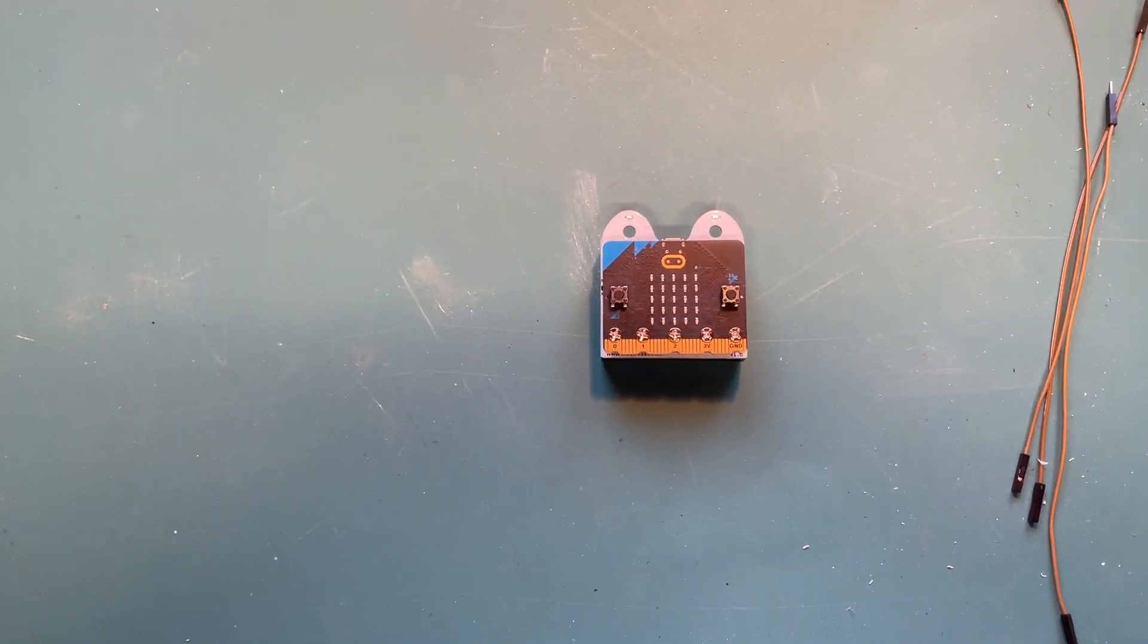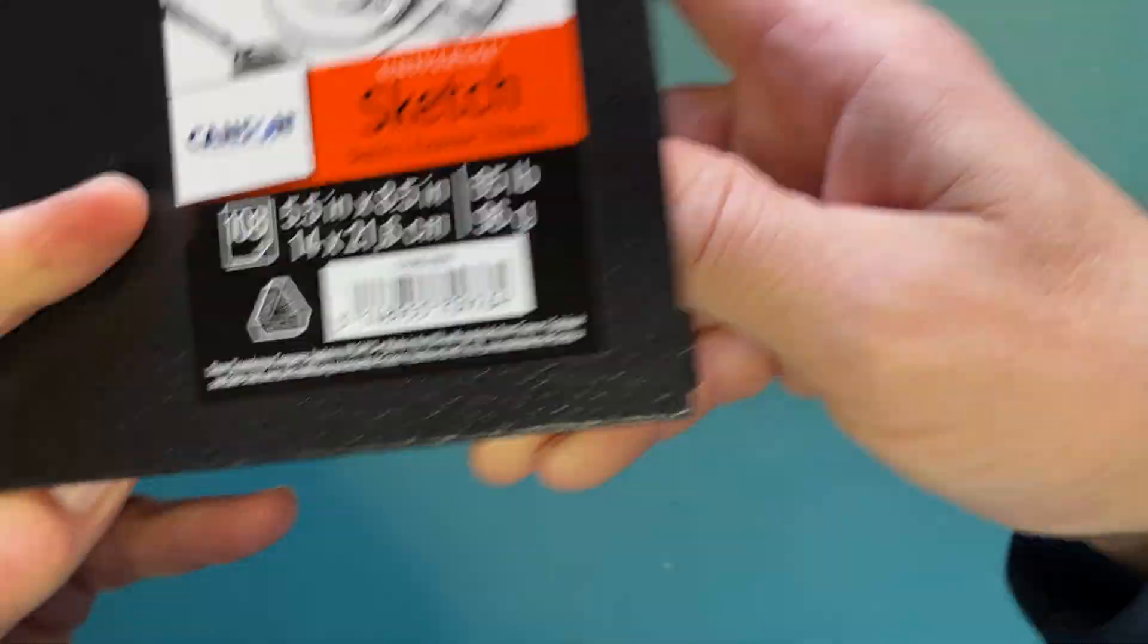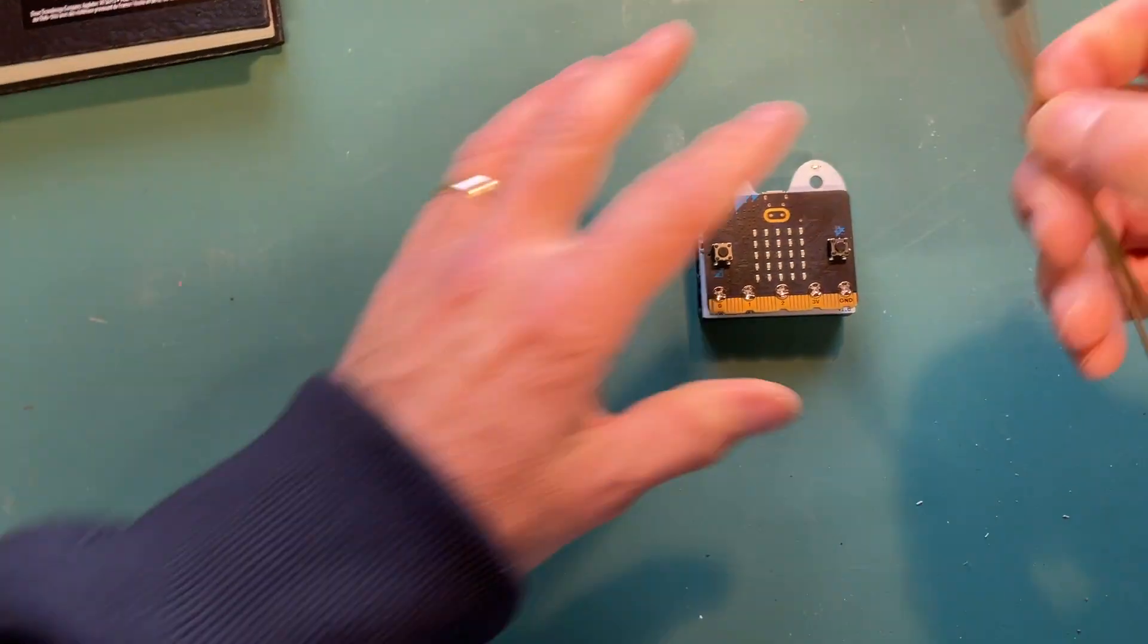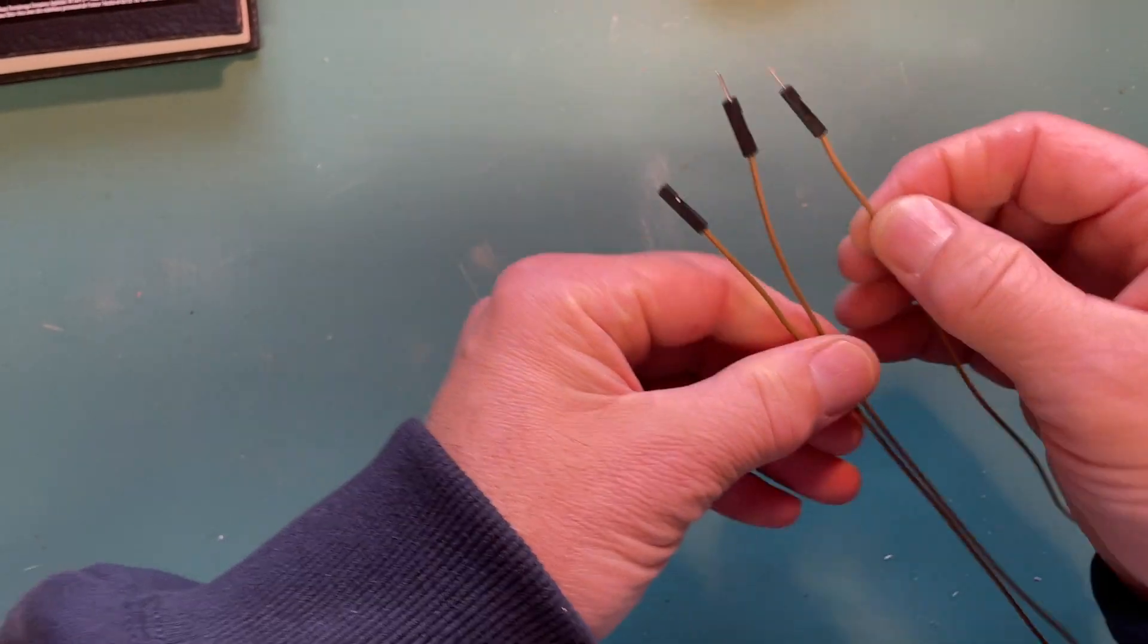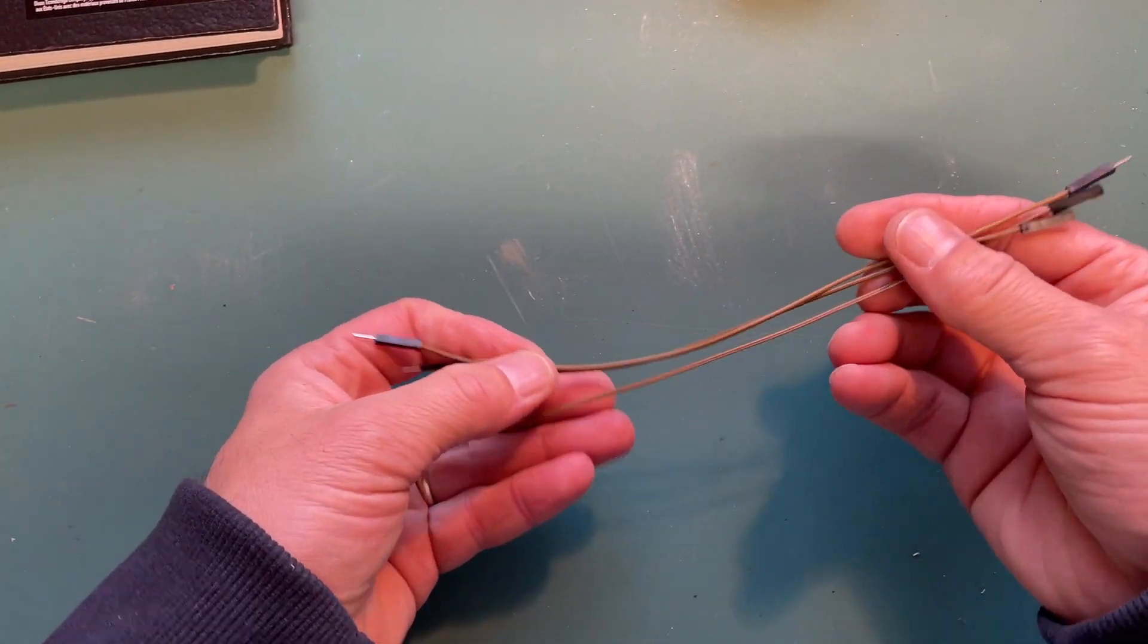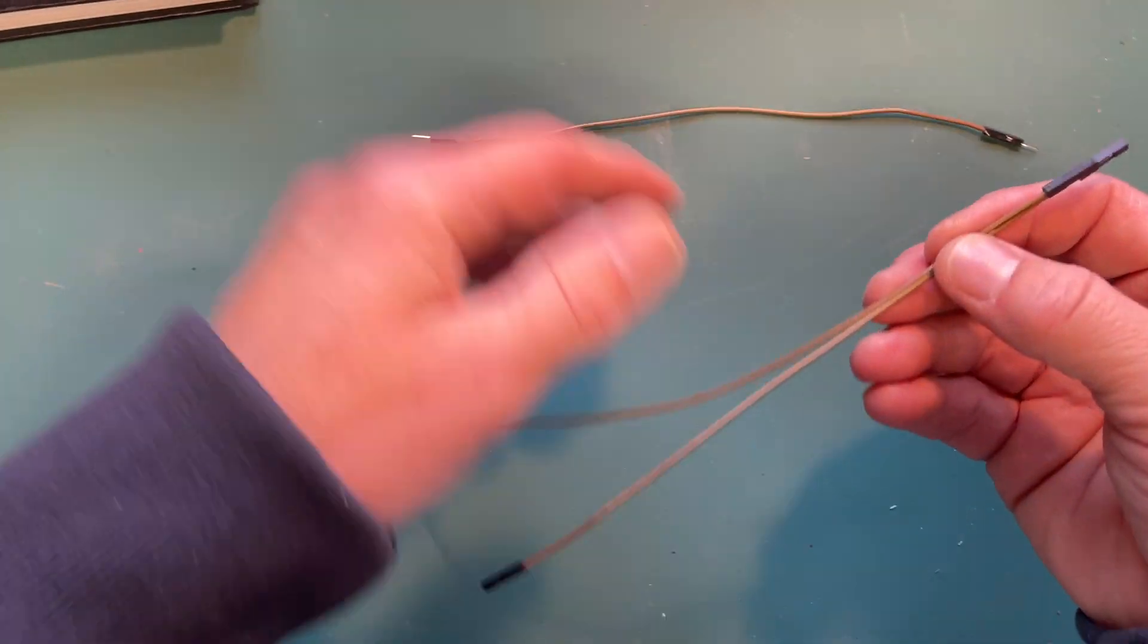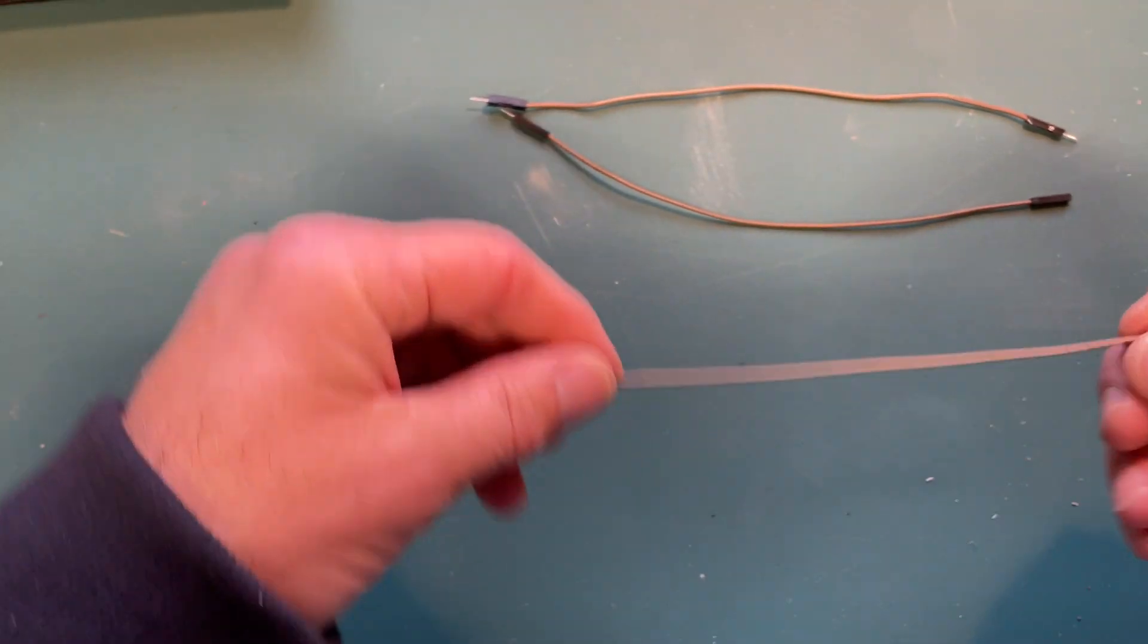So how to use jumper wires. Jumper wires are these little skinny wires that are used to attach pins from one device to another, and there's three types depending on what is at the ends of them.